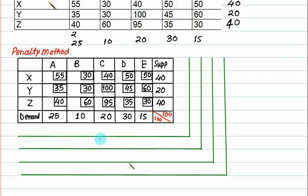What is the minimum cost in the first row? It is 30. The next cost is 40, so the penalty is 10. In the second row, the lowest cost is 30 and the next immediate cost is 35, so the penalty is 5. The costs are 40, 60, 30, 35 and 30. For 30 and 35, the penalty is 5.